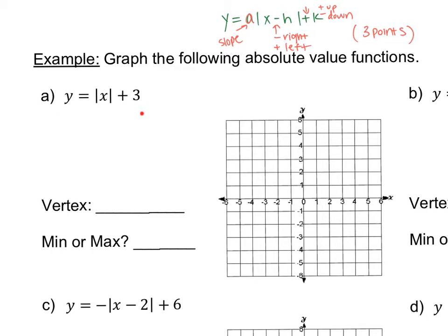First, when you're looking at an absolute value, determine the shift because that helps you determine the vertex. This absolute value sign doesn't have anything inside, so there is no right or left shift. But there's a positive three on the outside, so this means up three. You always start at the origin. In this case, I have to shift up three, so I go up three and plot my point.